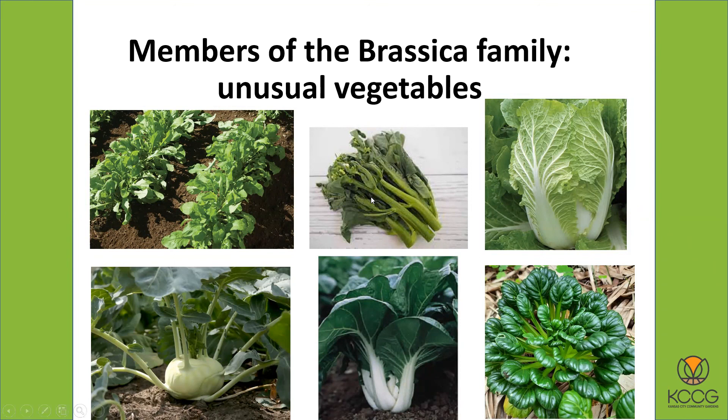The other question is whether BT will hurt monarchs — that is a very good question. BT will kill members of the caterpillar family, so if you sprayed it on plants that were hosting monarchs, it would affect them. But you're only going to use it on members of the brassica family.